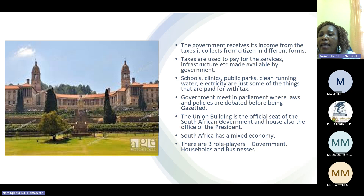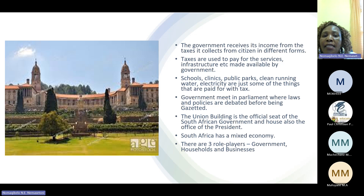The government must have an income so that it is able to provide services. The government receives its income from the taxes it collects from citizens in different forms. These taxes are used to pay for services and infrastructure made available by the government — they are able to build schools, provide clinics, public parks, clean running water, and electricity. These are just some of the things paid for with tax.